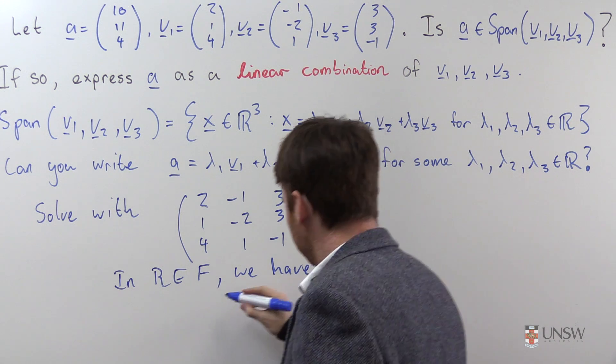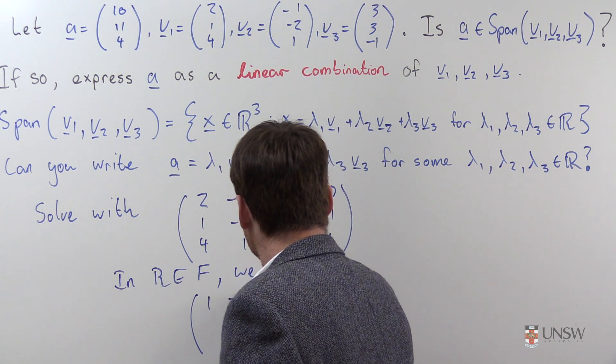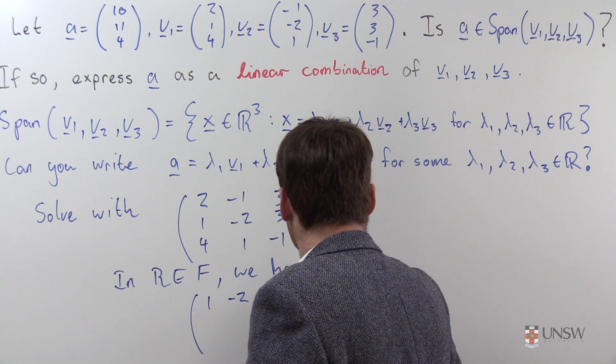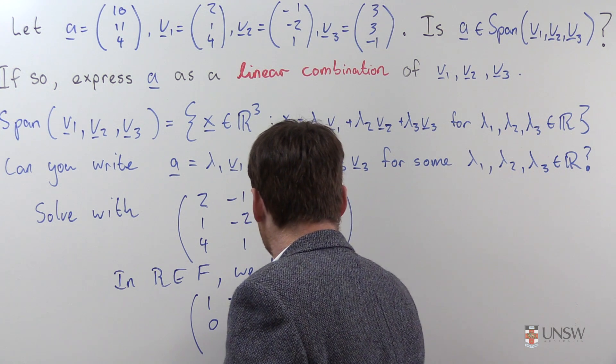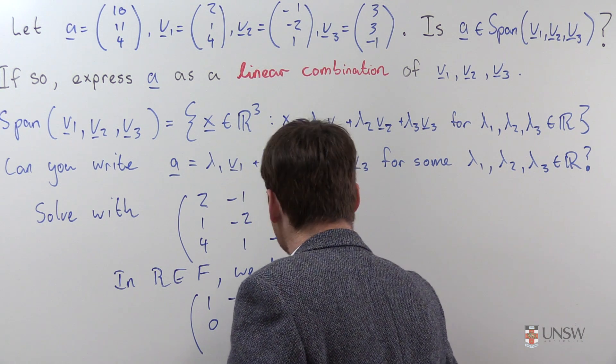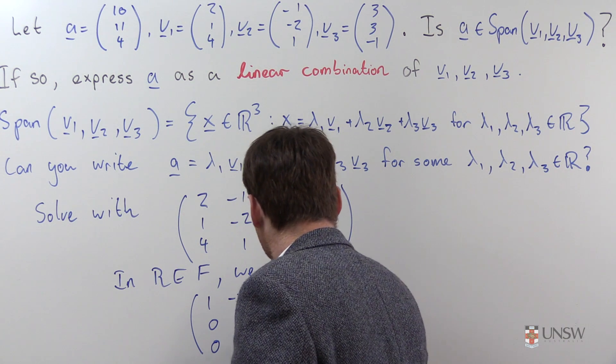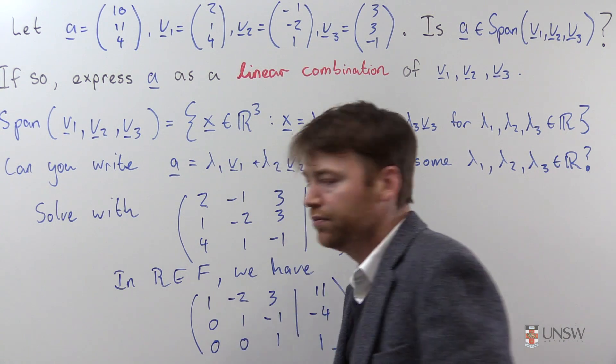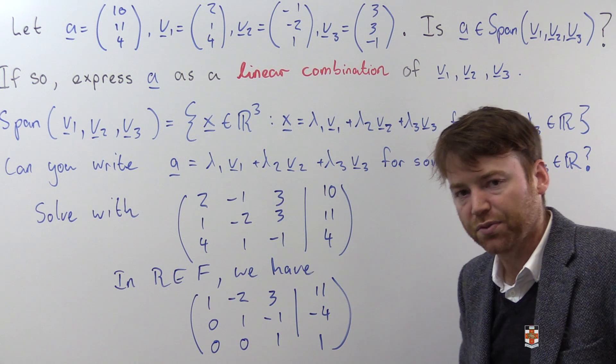So I'll skip all the row reduction and just say in row echelon form we have 5 row reduction, the matrix 1, negative 2, 3, 11, 0, 1, negative 1, negative 4, 0, 0, 1, 1. Row reduction will take you there.